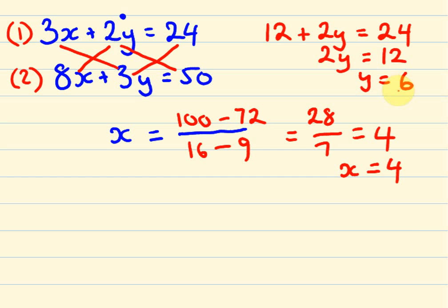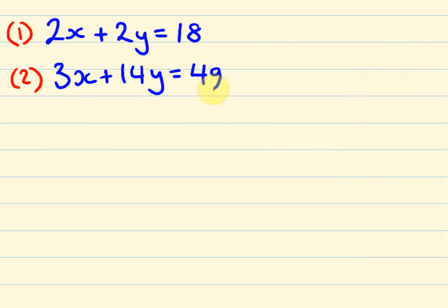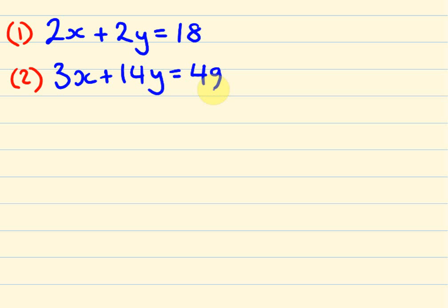So I should be able to substitute these values in and see if they're correct. So if x is 4, 4 times 8 are 32 plus 6 times 3 is 18, and indeed that does equal 50. Correct answer. What about one more example? So let's have a look at this example. We have 2x plus 2y equals 18 and 3x plus 14y equals 49.